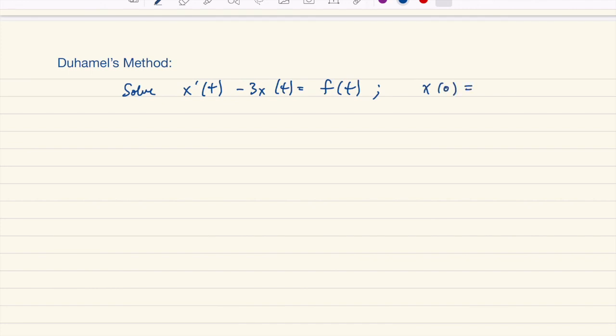Here we want x of 0 to be 0 and x prime of 0 to be 0. So we have our two initial values, and what we're going to do is throw everything that we have at this problem.